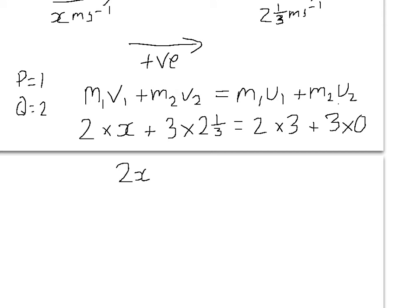So 2x plus 7 is equal to 6. Now 3 times 0 is 0, so I'm not going to write that down. So 2x is equal to minus 1 by subtracting 7. So x is equal to minus a half ms to the minus 1.